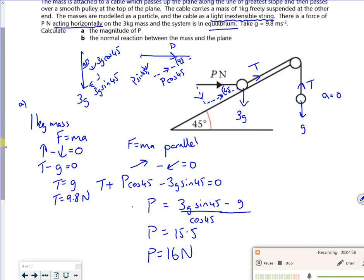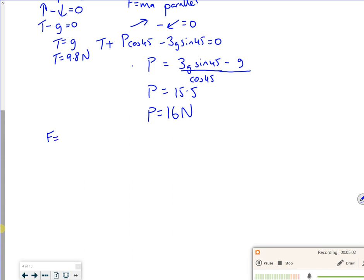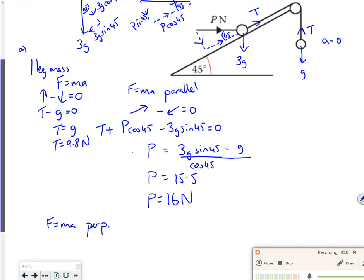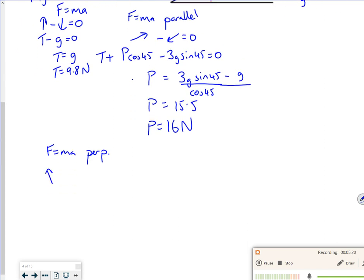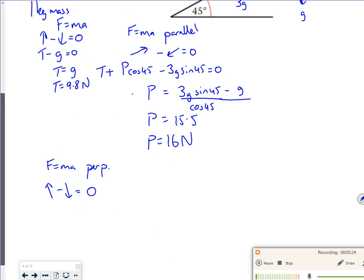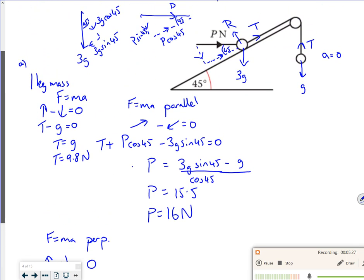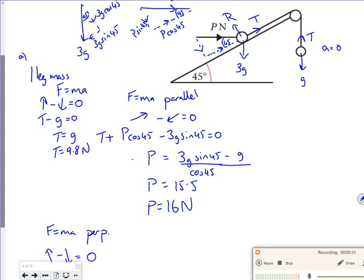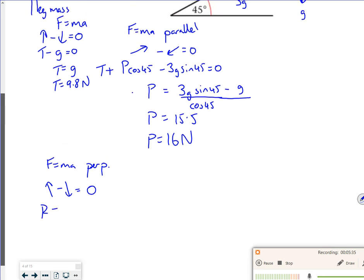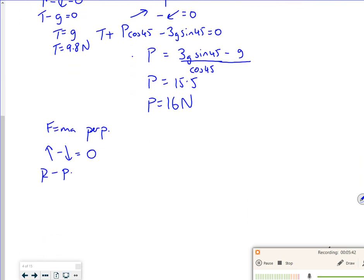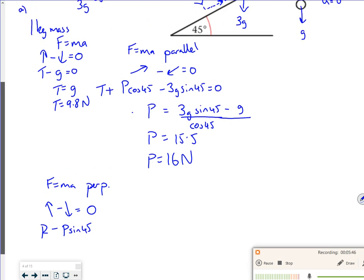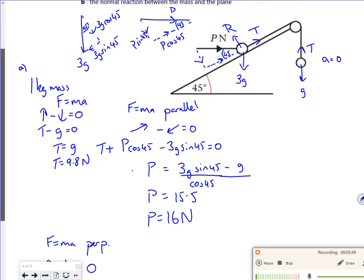Then part B says the normal reaction. So if I look, so F equals ma perpendicular to the plane. So remember, it's in equilibrium, because it's not bouncing off the plane, it's not burying itself down the plane. So forces going up the plane minus forces going down, perpendicular R, equal to zero. So being really careful now, seems a bit wrong a minute ago. The force going up is R. A force going down from my picture is my P sin 45.